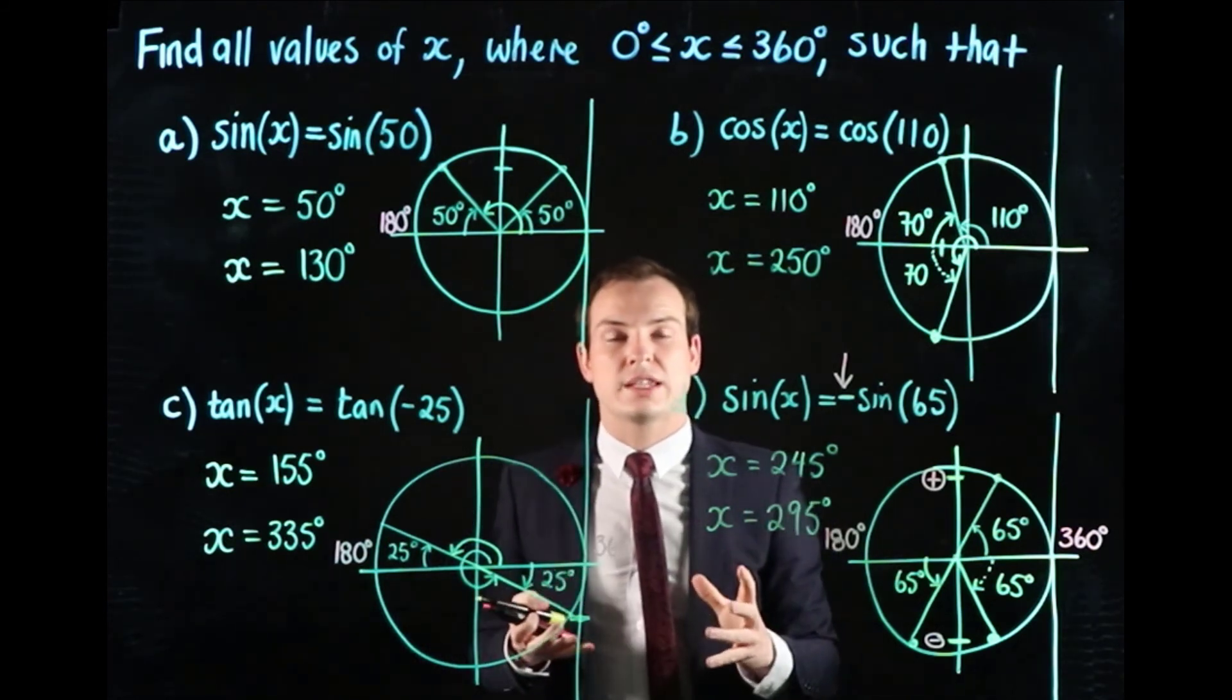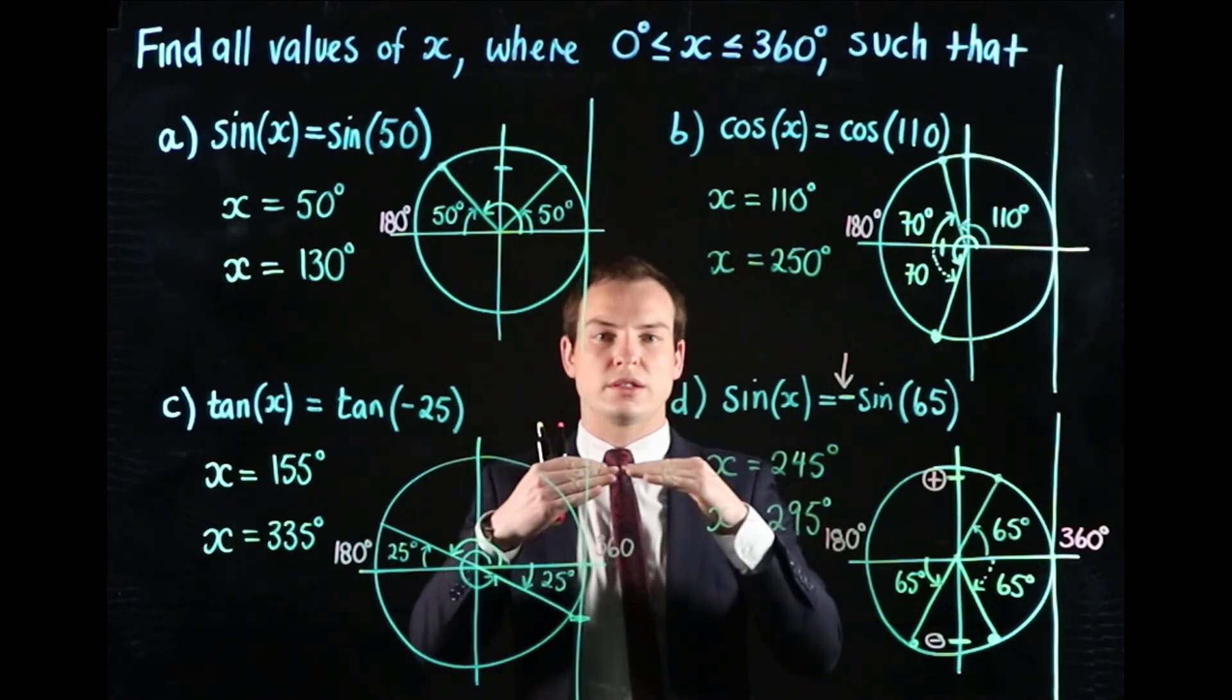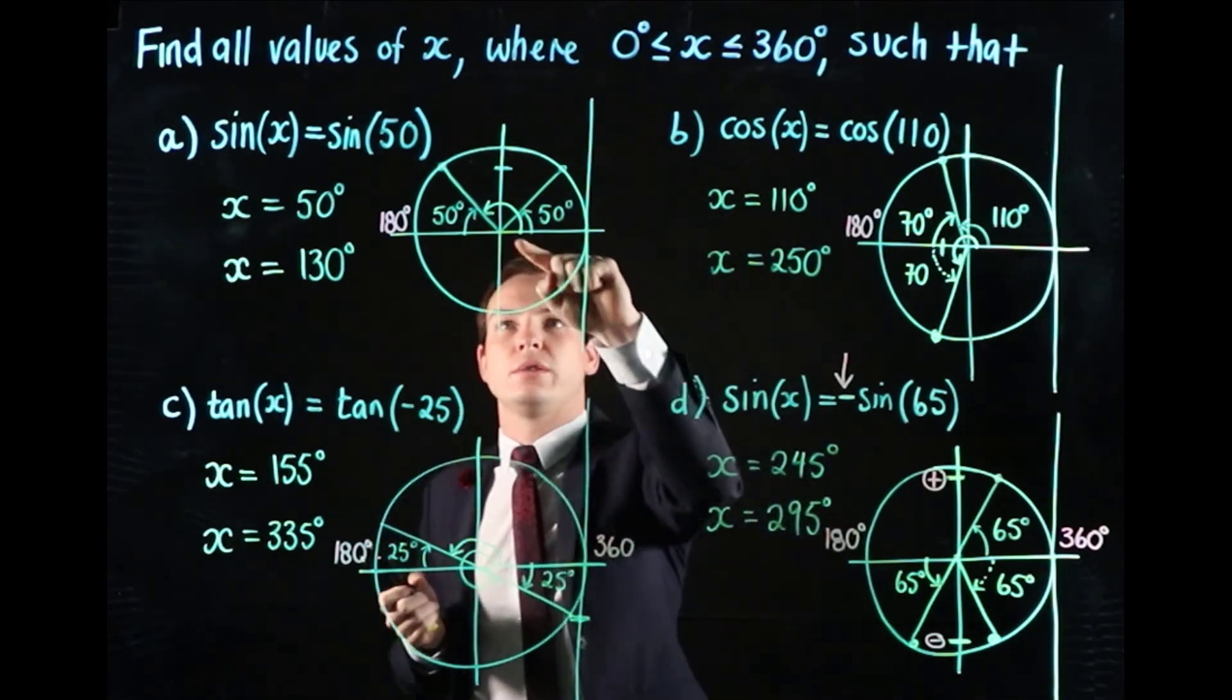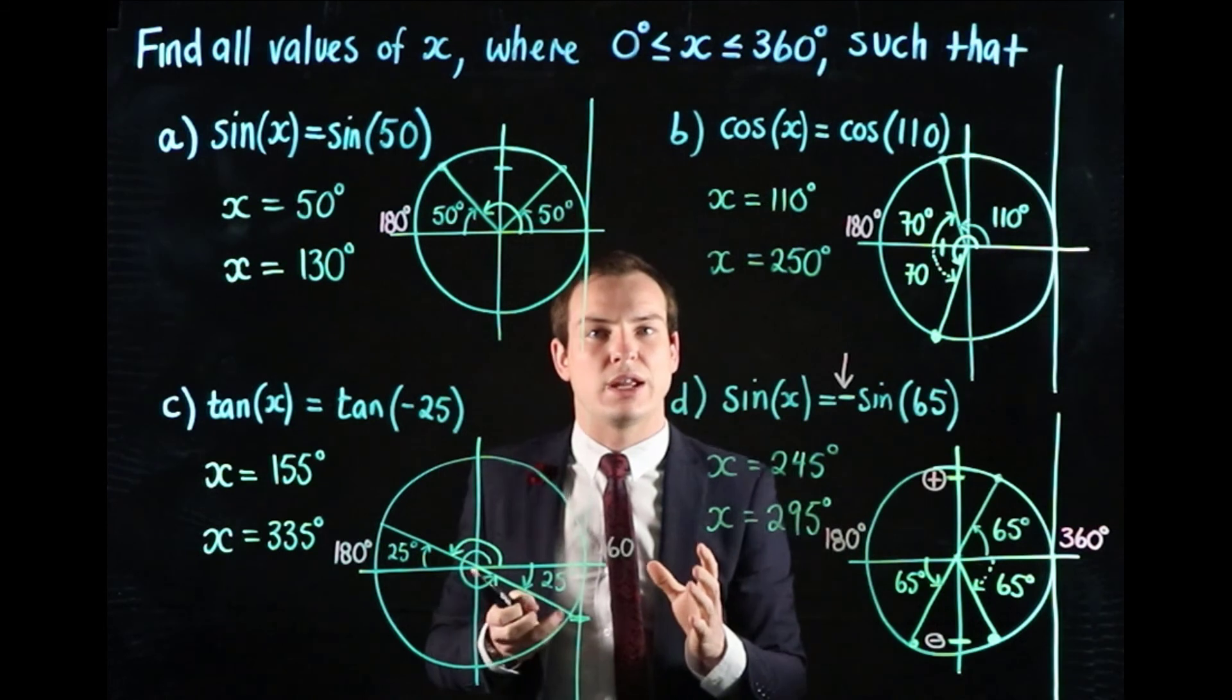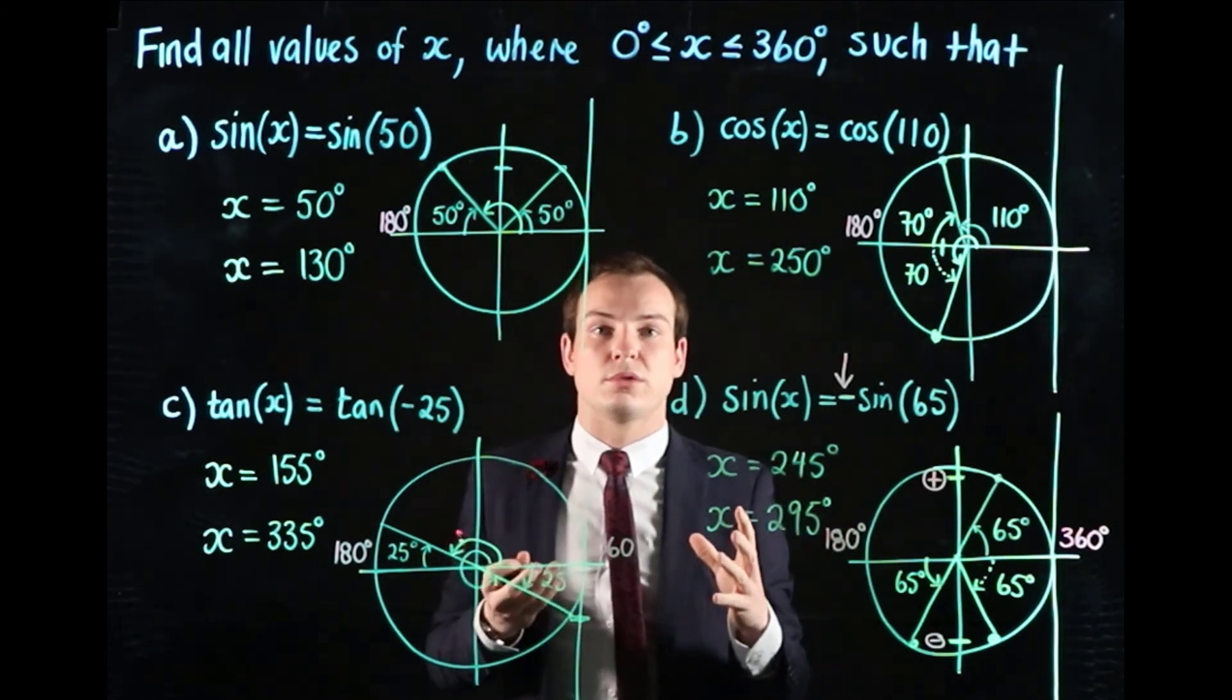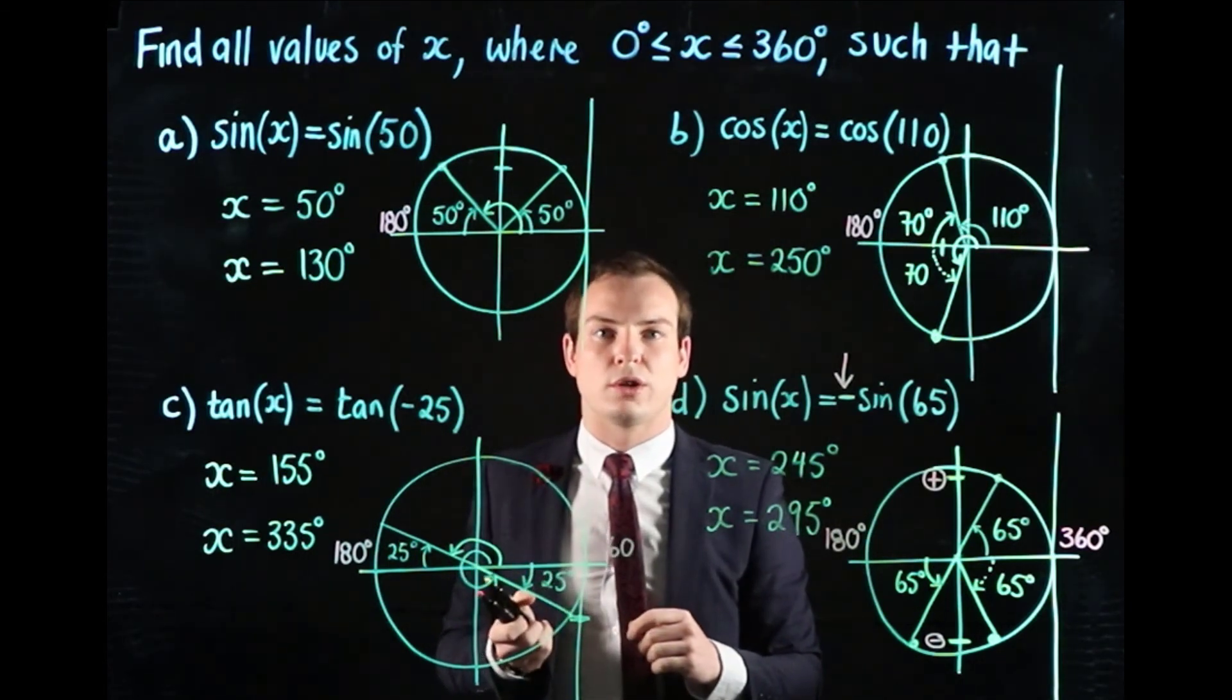Hopefully that example's helped. There's a fair bit to unpack in that, but a few of the really key things: we're always looking at the angles as they come off the horizontal, so we're always looking at how far back or forward from 180 or how far back or forward from 360 degrees our angle is. Stay tuned for more videos that go through symmetry and the unit circle, and good luck with any of the problems that you're attempting.